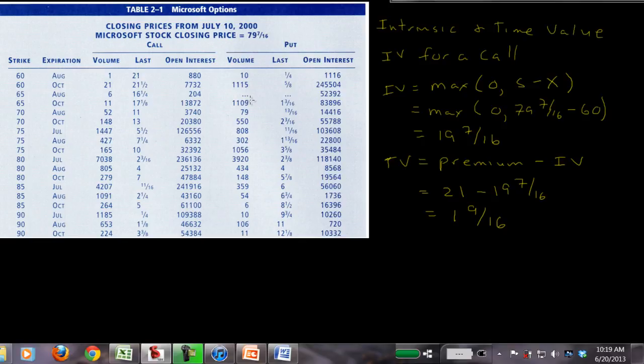Let's take a look at the intrinsic value for a put option. The IV for a put is going to be equal to the maximum of zero, in this case it's going to be the exercise price minus the stock price. Why is that? Because in the case of a put, you can sell at the exercise price even though you only pay S to buy it. So the higher the exercise price, the higher the sell price you have.